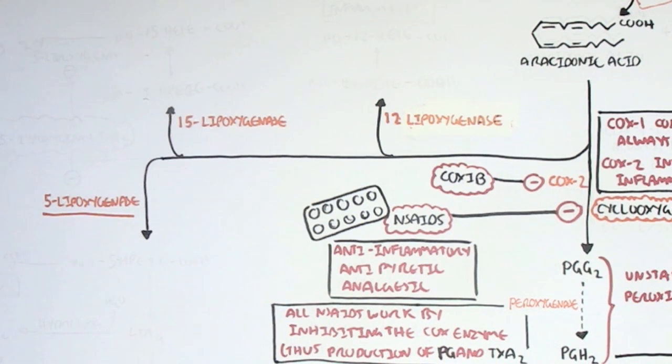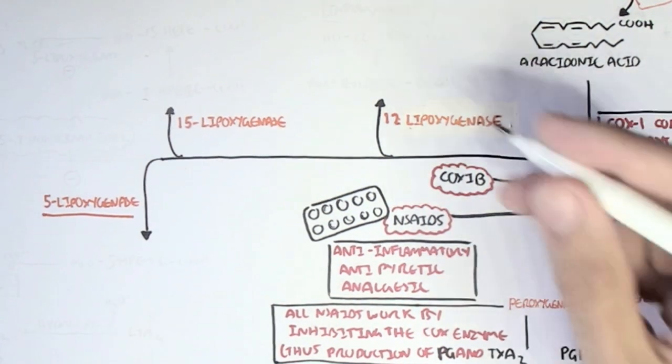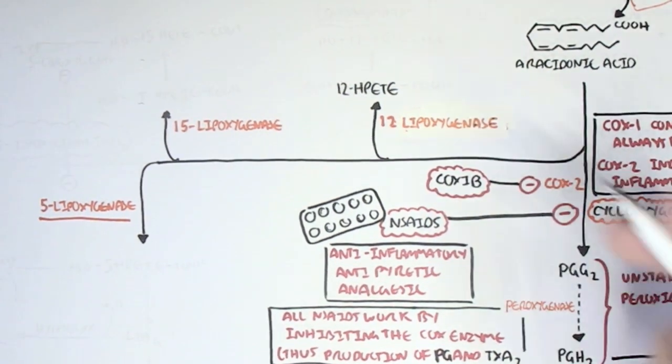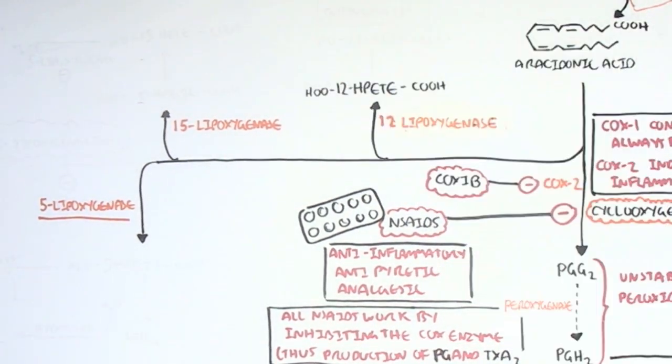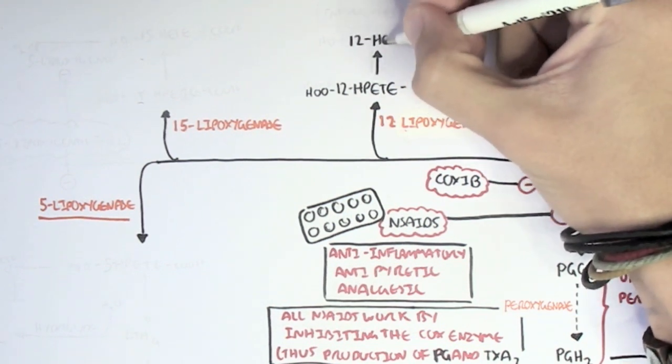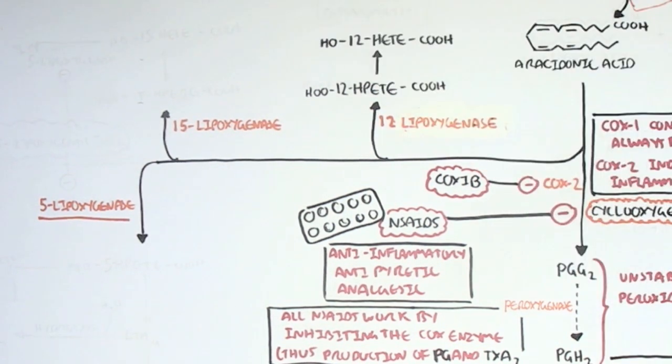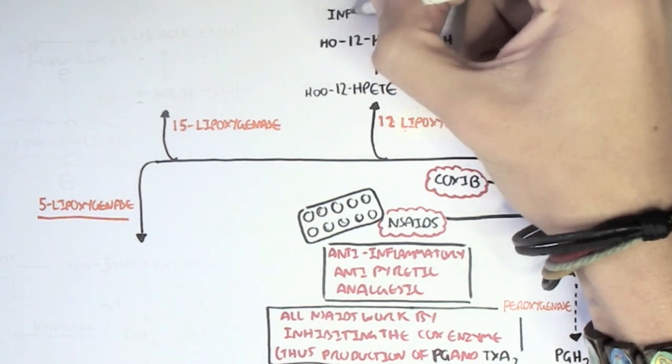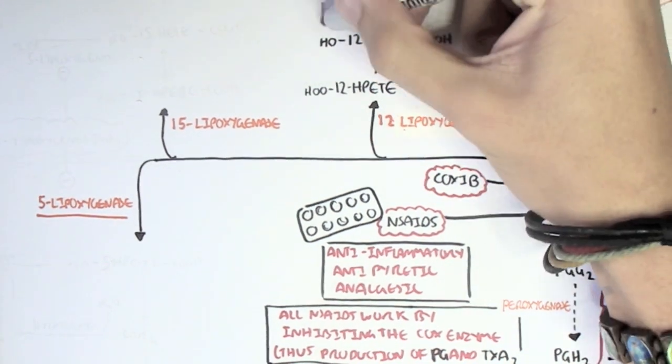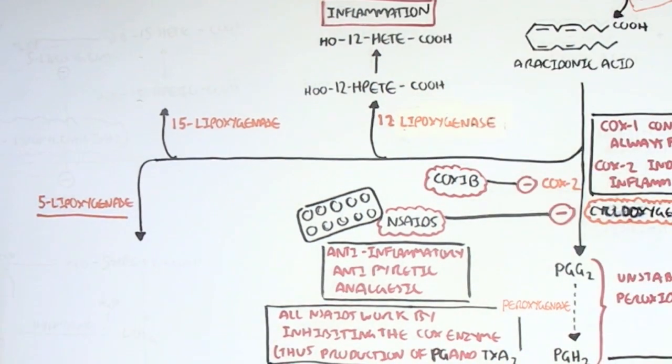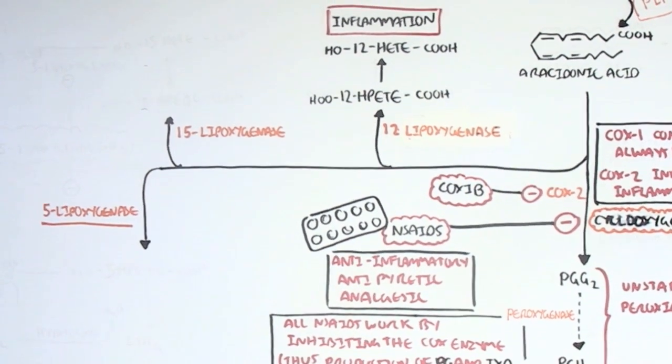So arachidonic acid can be converted to 12-HPETE by the enzyme 12-lipoxygenase. 12-HPETE is unstable and will quickly convert to 12-HETE and 12-HETE will cause inflammatory actions. Now the difference between the two is that one has a hydroperoxy group and the other has a hydroxyl group.